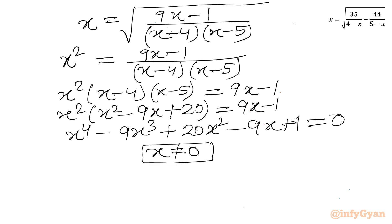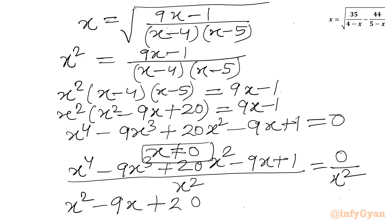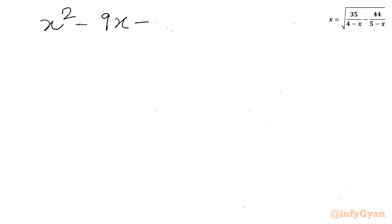Since x equals 0 does not satisfy this equation, I can divide both sides by x squared. Dividing x⁴ minus 9x³ plus 20x² minus 9x plus 1 by x squared gives: x² minus 9x plus 20 minus 9 over x plus 1 over x² equals 0.